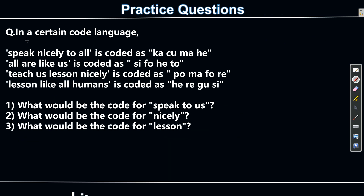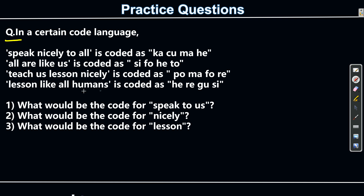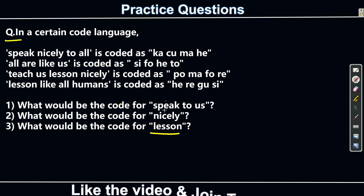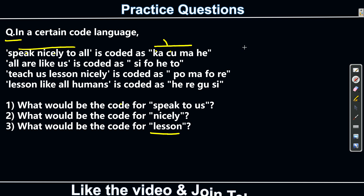Here is the example. In the exam you will get questions like: 'speak nicely to all' is coded as 'ka cu ma he'; 'all are like us' is coded as 'si fo he t'. We need to find the code for 'speak to us', 'nicely', and 'lesson'. Note: you can't directly say speak equals ka, because the sequence is not fixed — speak is not necessarily ka, nicely is not necessarily cu.